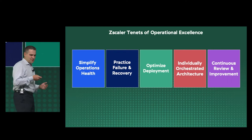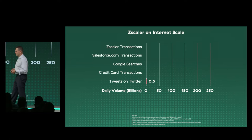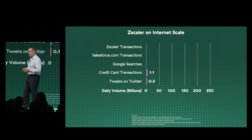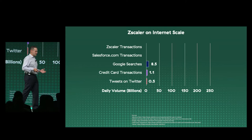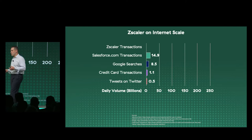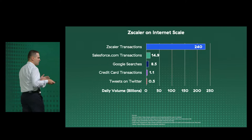Keeping this in mind, let's go back to scale. It really helps to compare Zscaler to other global platforms. On Twitter, there's about half a billion tweets per day. Credit card transactions — there's about 1.1 billion of them. There are about 8.5 billion Google searches, and Salesforce has 14.9 billion transactions per day. When you get to Zscaler, this number is always wrong, but there's 240 billion — and it's always wrong because probably now it's 241 or 242.